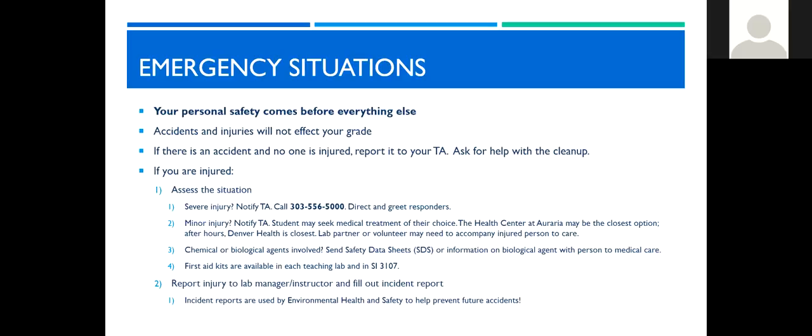If there is a chemical or biological agent involved, send the safety data sheet or information on the biological agent with the person to medical care. First aid kits should be available in your lab and in the room SI 3107. Please report all injuries and accidents to your lab manager, your instructor, your TA, and EHS will do their best to try to prevent future accidents from happening.